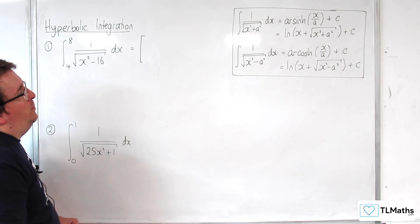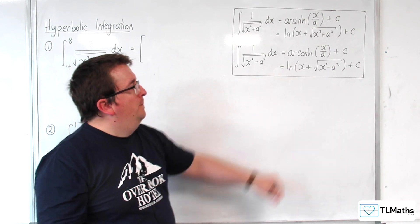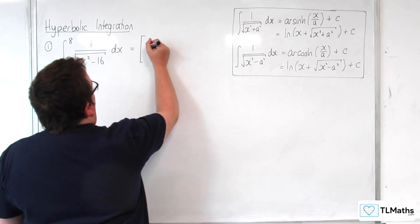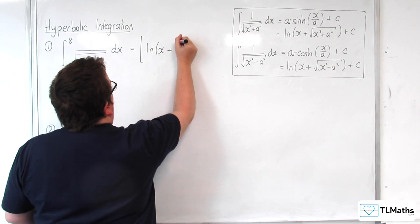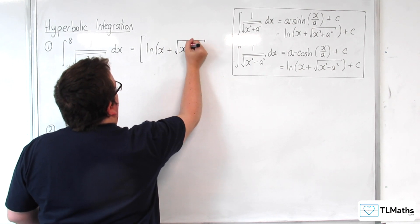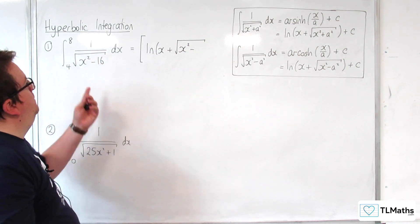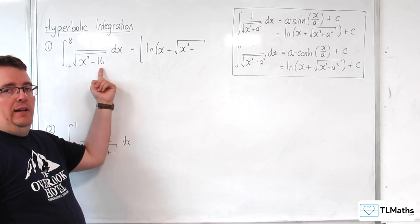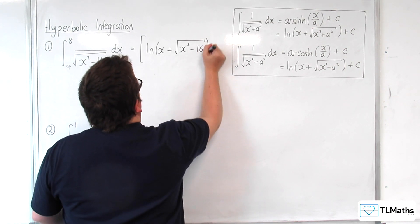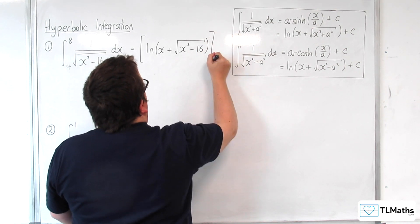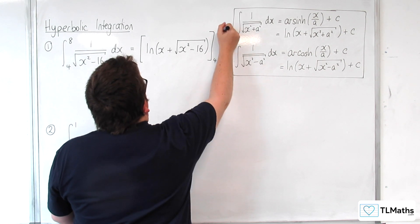I'm going to put it into the logarithmic form. So we have log of x plus the square root of x squared minus a squared. Now a is clearly 4, so we're taking away 16, and we're evaluating that between 4 and 8.